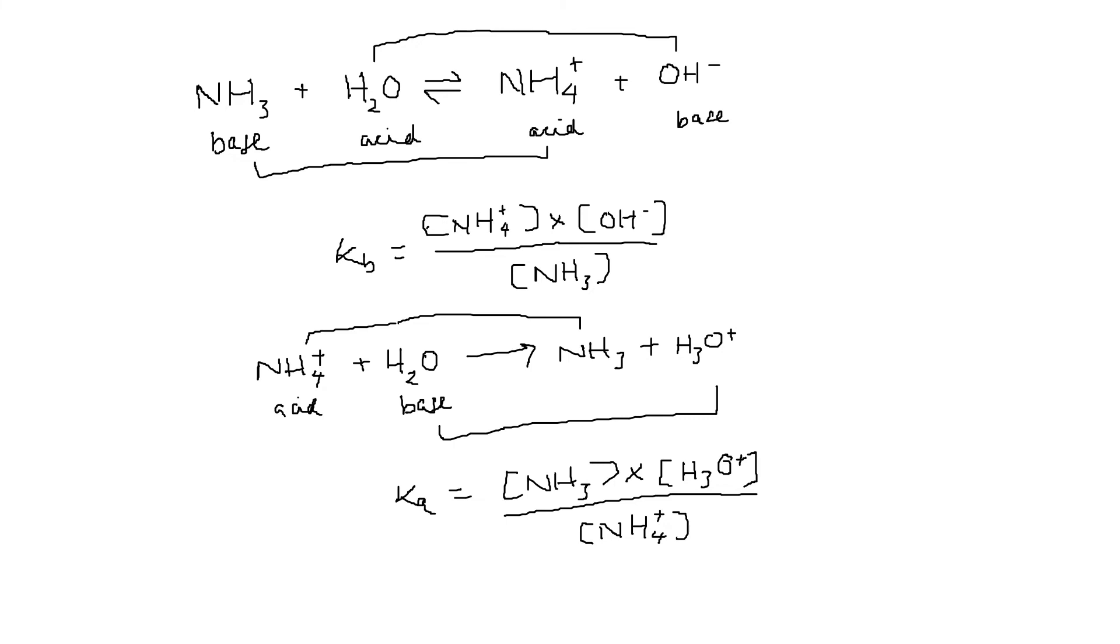So if we now multiply Kb by Ka, we can use the expressions which we've just written down. We just said that Kb is equal to NH4+ multiplied by OH- divided by NH3